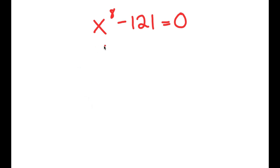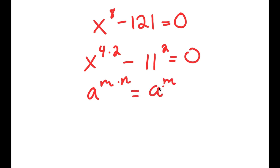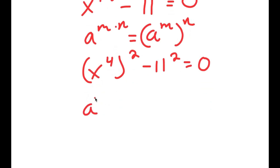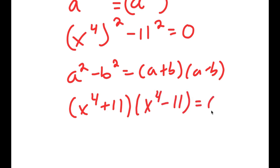In this problem, I have x to the power of 8 minus 121 is equal to 0. To solve this, I'm going to first start by rewriting x to the power of 8 as x to the power of 4 times 2. And I have this minus 121, which is the same thing as 11 squared. Now if I have something in the form a to the power of m times n, this is equal to a to the power of m to the power of n. So x to the power of 4 times 2 equals x to the power of 4 to the power of 2, minus 11 squared equals 0. Using the difference of squares — a squared minus b squared equals a plus b times a minus b — this becomes x to the power of 4 plus 11 times x to the power of 4 minus 11 is equal to 0.